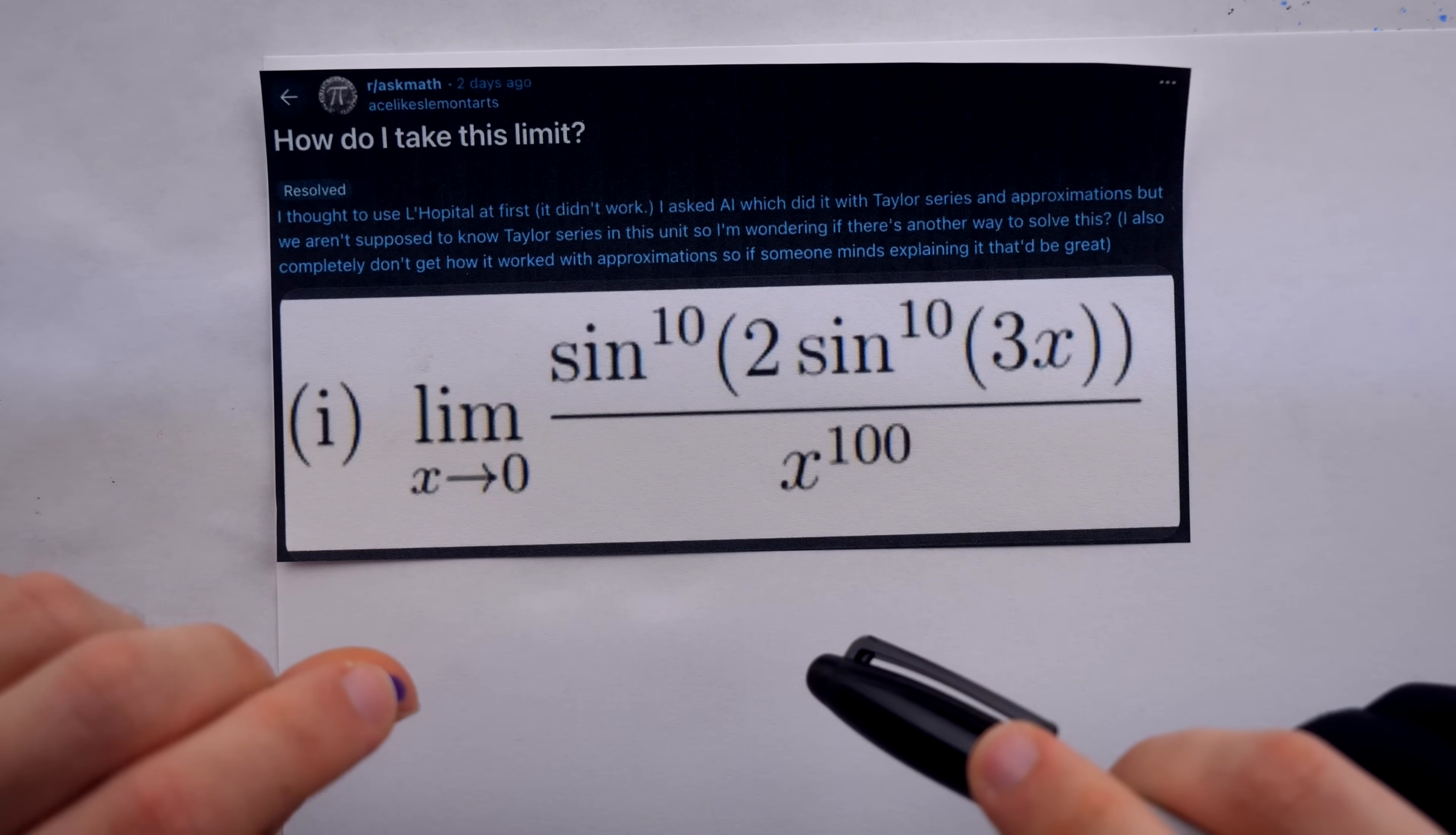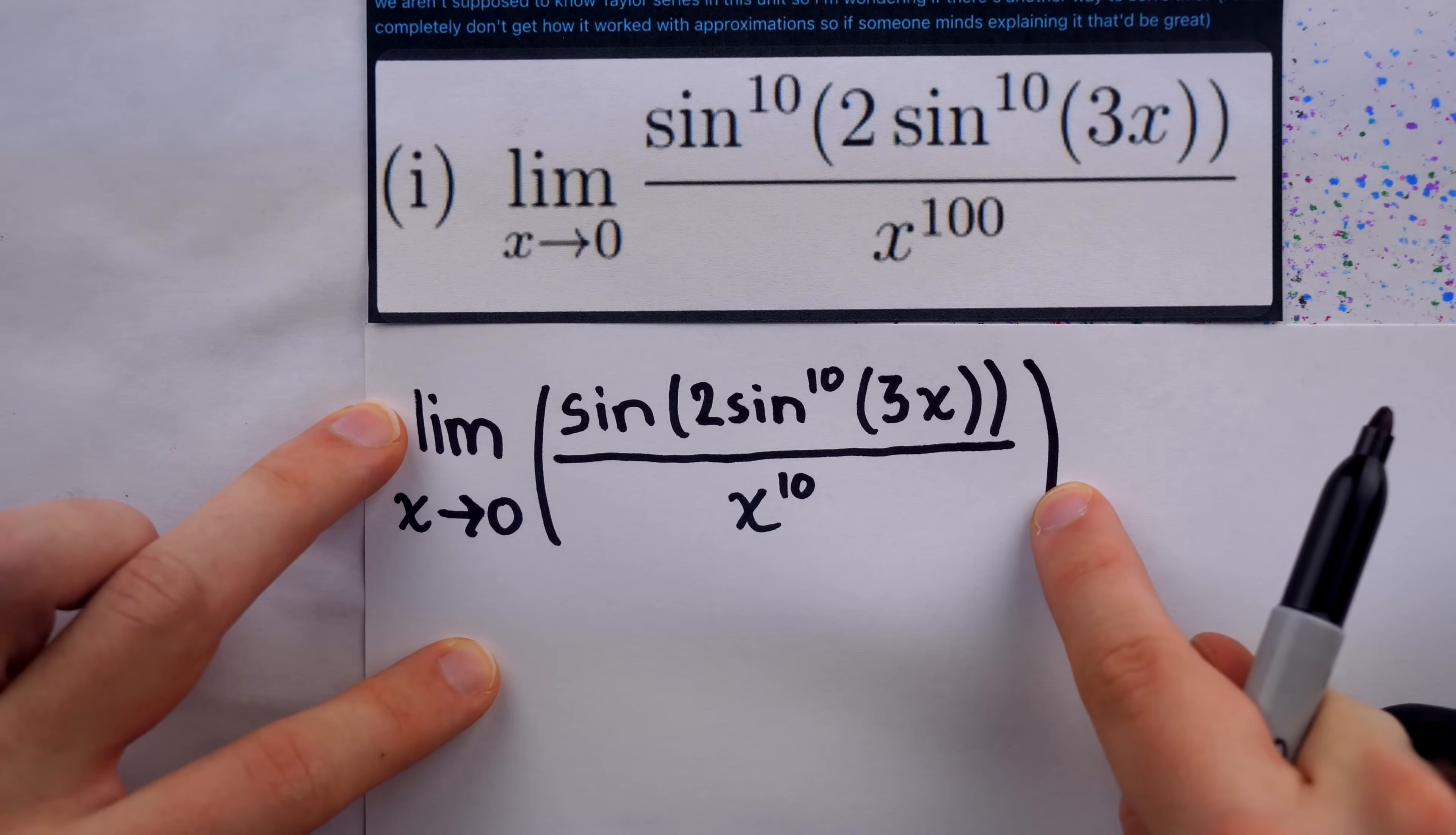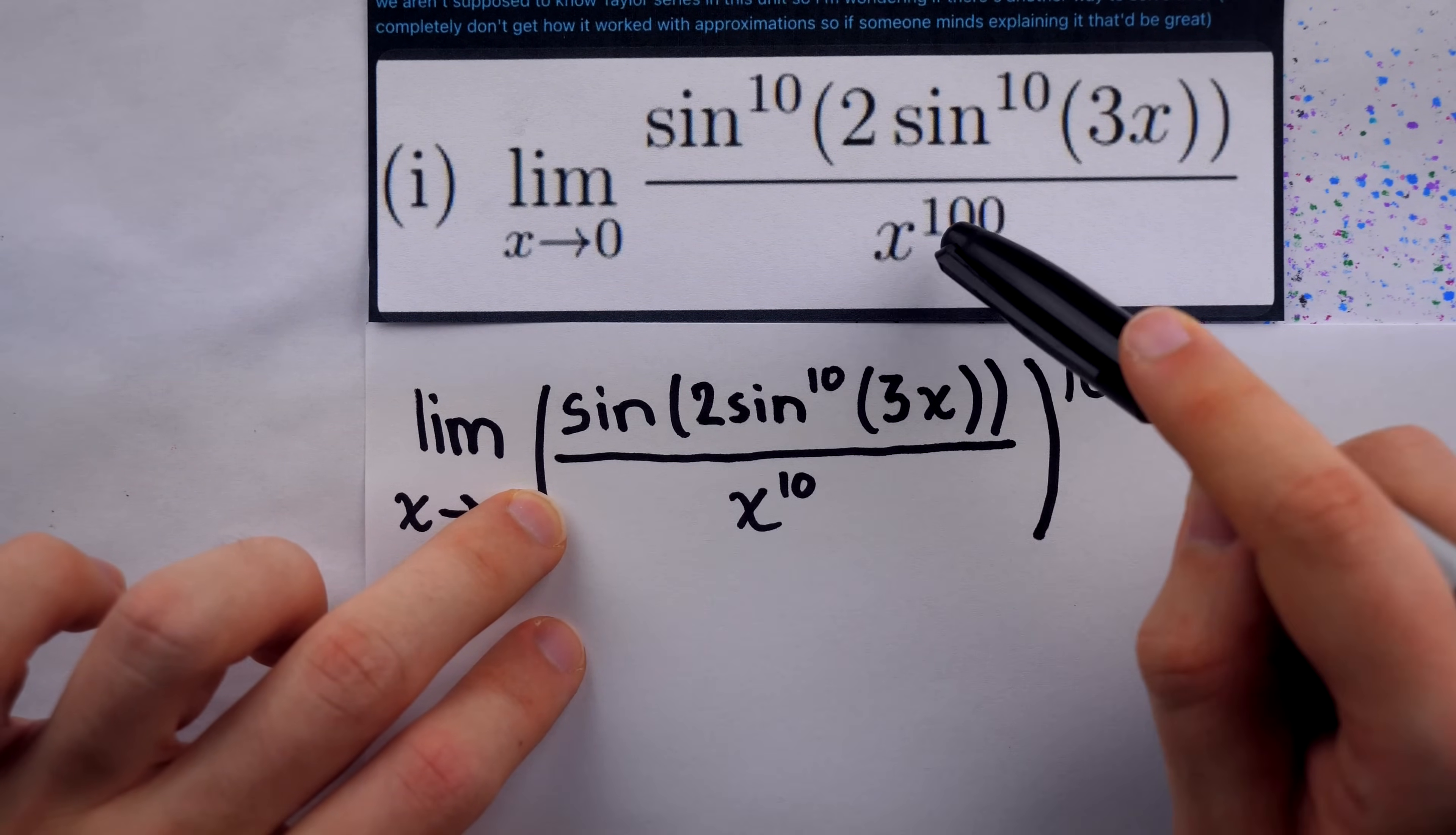The first thing we're going to do is take an exponent of 10 off of this sine and off of this x to the 100 in the denominator. So now, instead of sine to the 10 in the numerator, I just have sine, and instead of x to the 100 in the denominator, I just have x to the 10. All of this, then, needs to be raised to the power of 10. Keep in mind, this is a single sine function. It's not sine times two sine. This is a sine function with this junk inside of it. So this exponent would just hit that sine function, giving us the sine to the 10 back, and it would hit the x to the 10, giving us x to the 100.